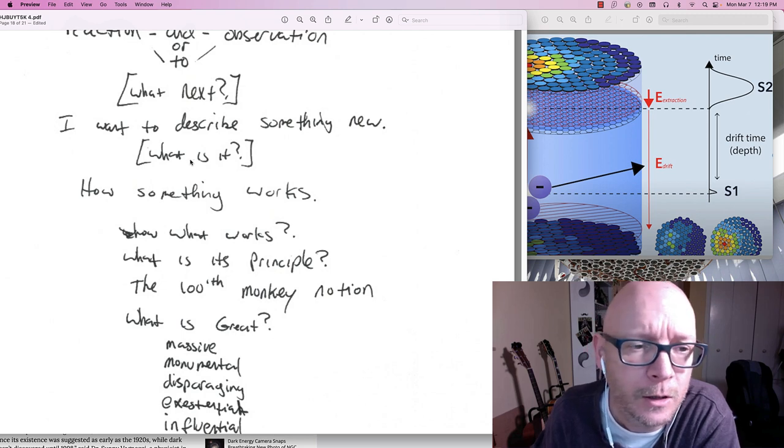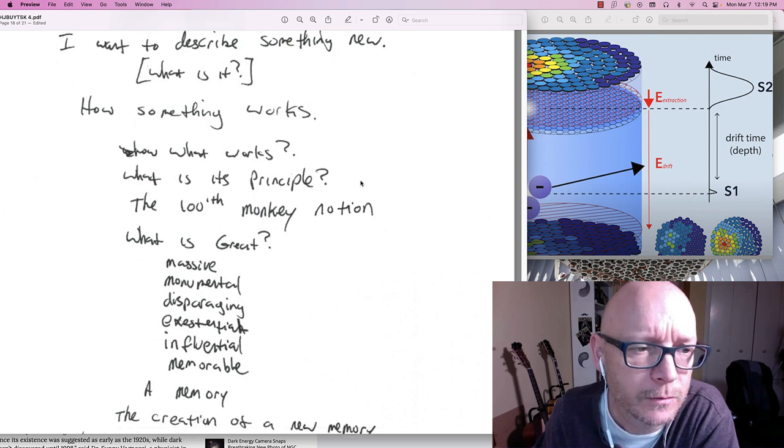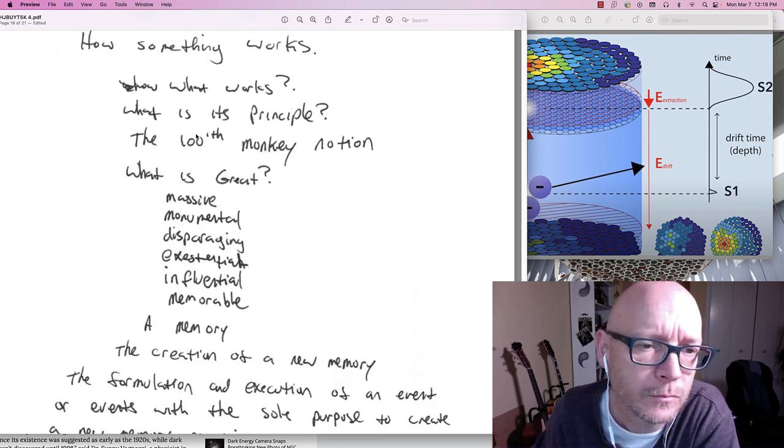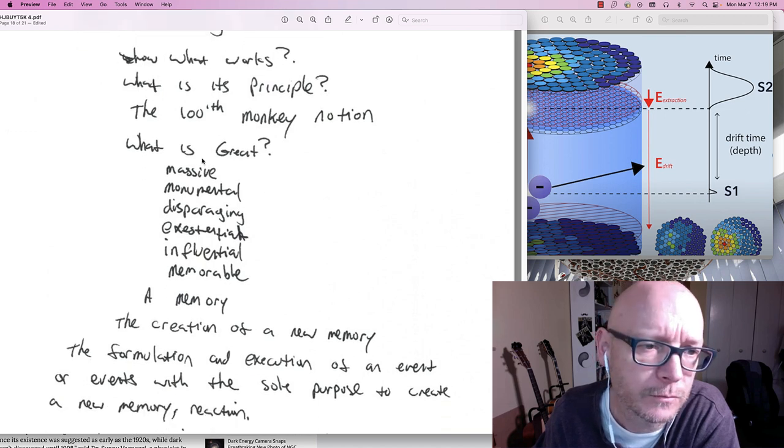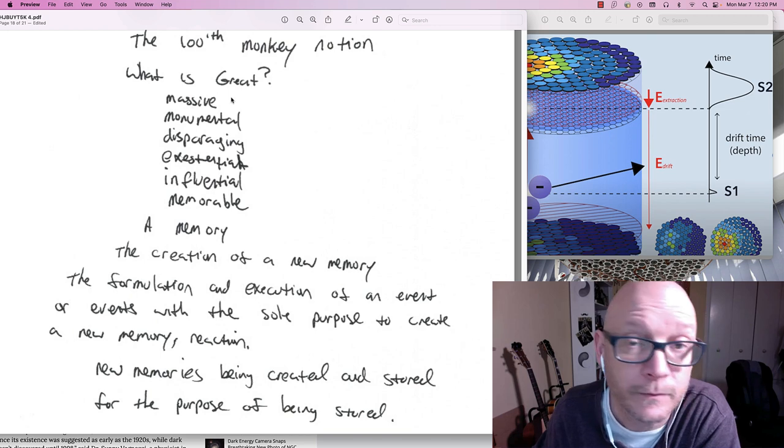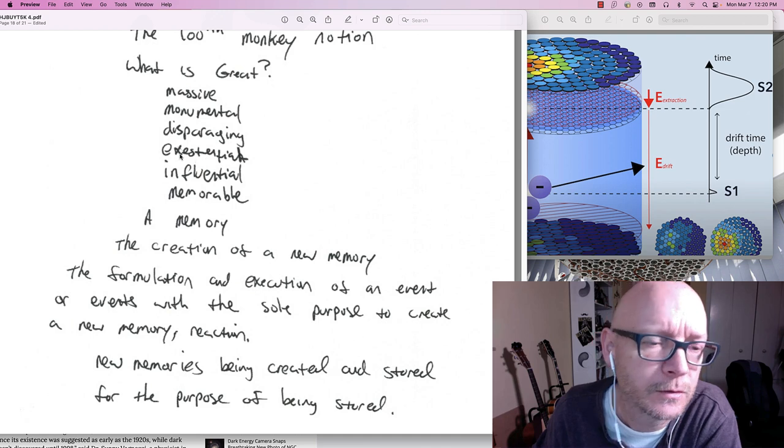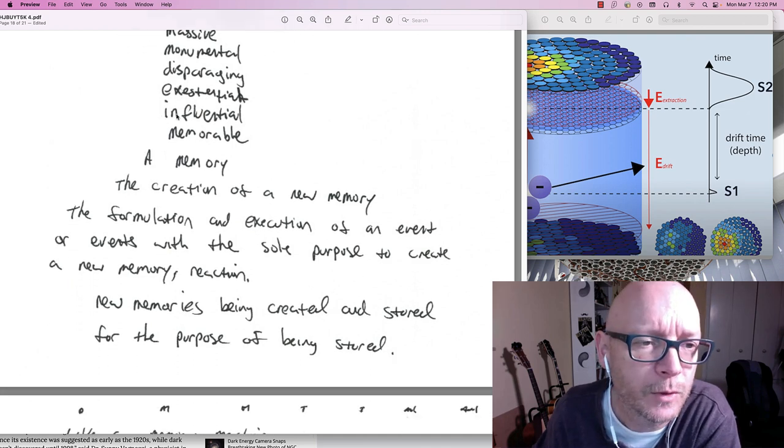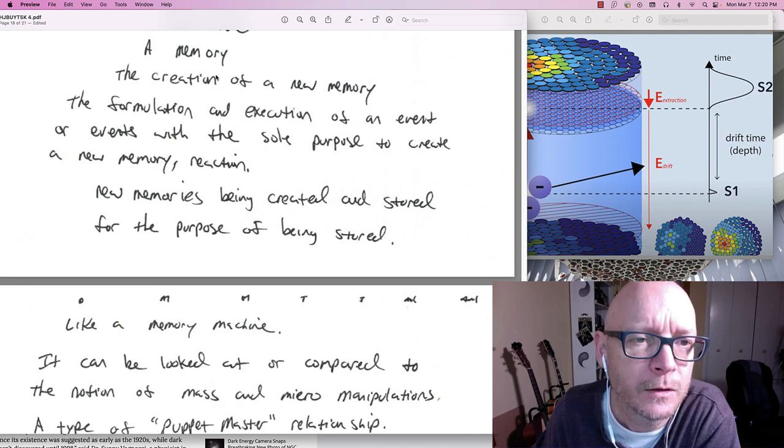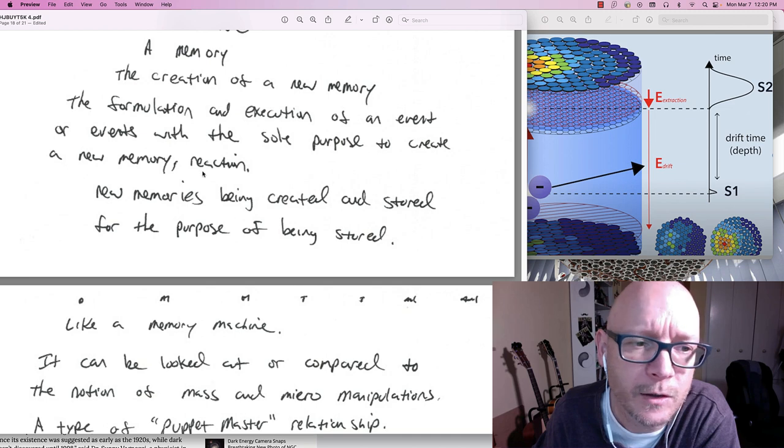With the purpose to create a new memory. New memory is being created and stored. The purpose. Memory machine. It can be looked at or compared to the notion of micro manipulations. A puppet master relationship.